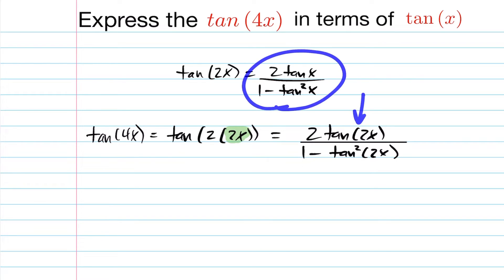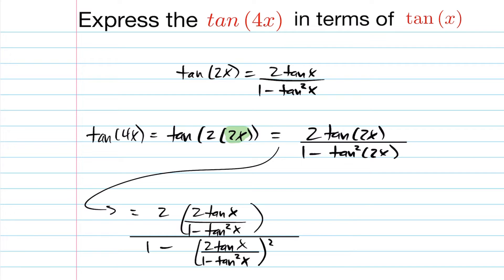Now I have the tan of 2x. I can go ahead and substitute this in for the top, and here I have the tan of 2x squared. Again, I can substitute that in, giving us the following.